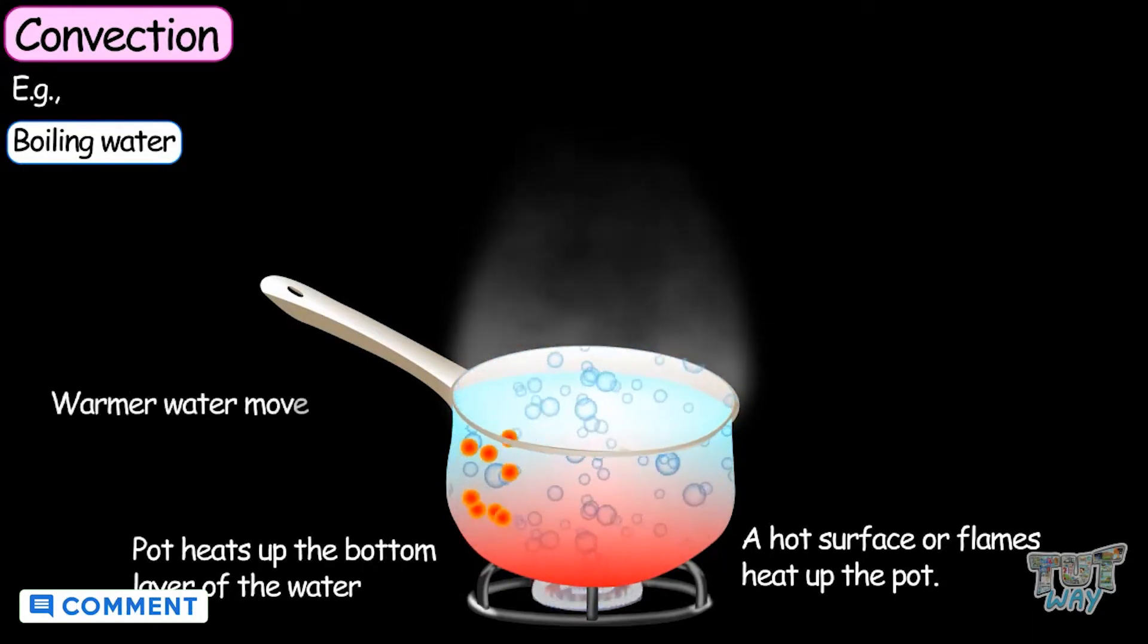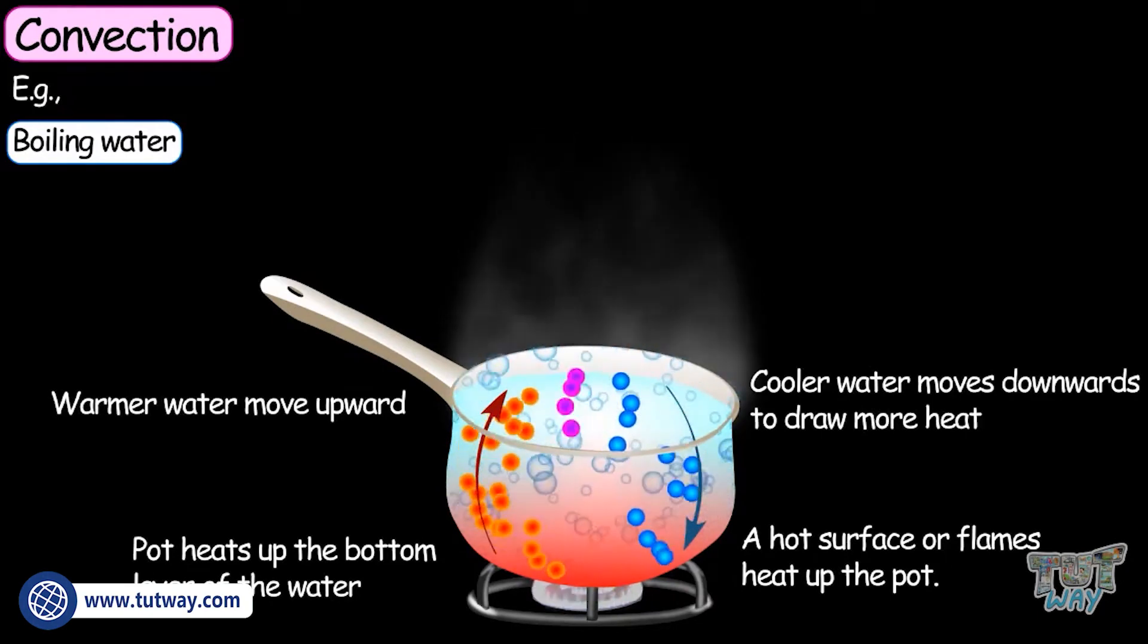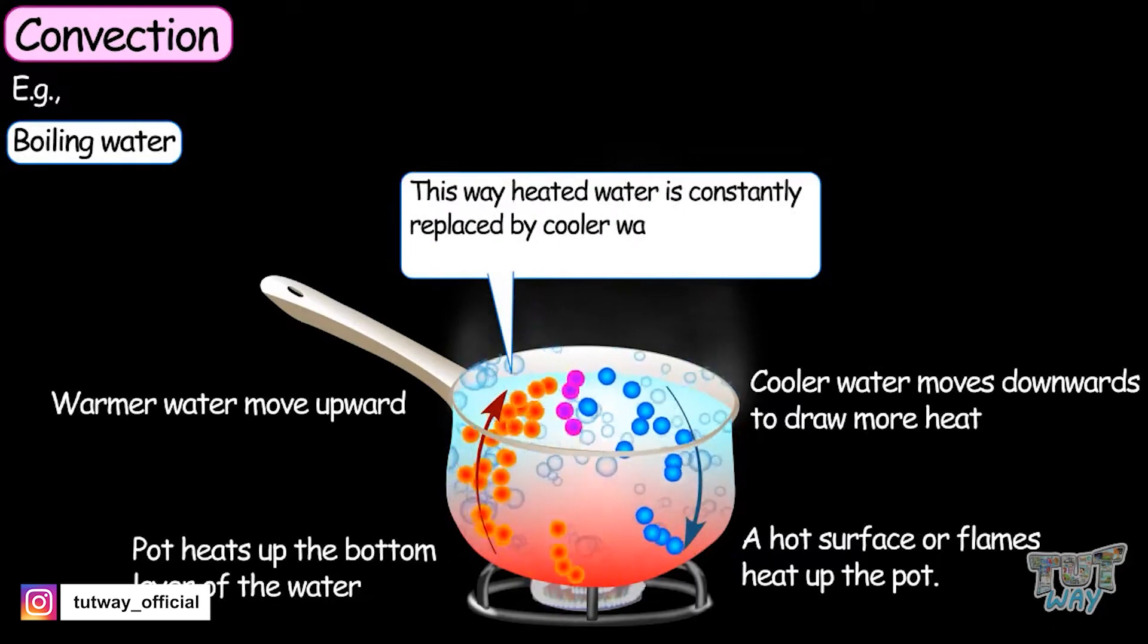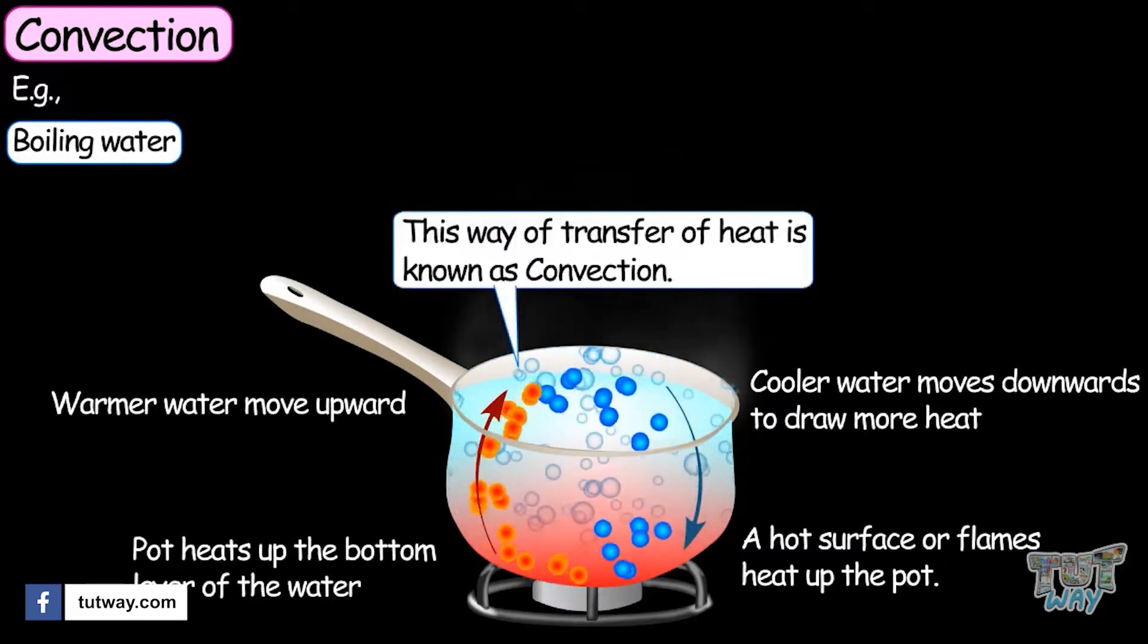The warmer water moves upwards and the cooler water moves downwards. This cycle continues as heated water is constantly replaced by cooler water in a circular manner. This way of heat transfer is known as convection.